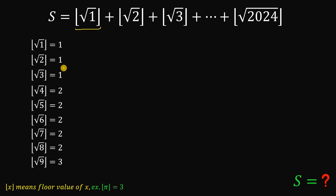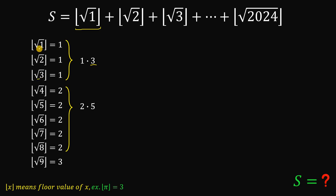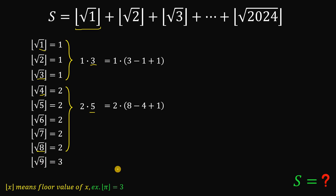How many ones do we have? We have 1, 2, 3 — so 1 times 3. How many 2s do we have? 1, 2, 3, 4, 5 — so 2 times 5. To count the three 1s, we use 3 minus 1 plus 1. To get the five 2s, we use 8 minus 4 plus 1 = 5. And for 3s, how many do we have? 15 minus 9 plus 1 = 7, so 3 times 7.